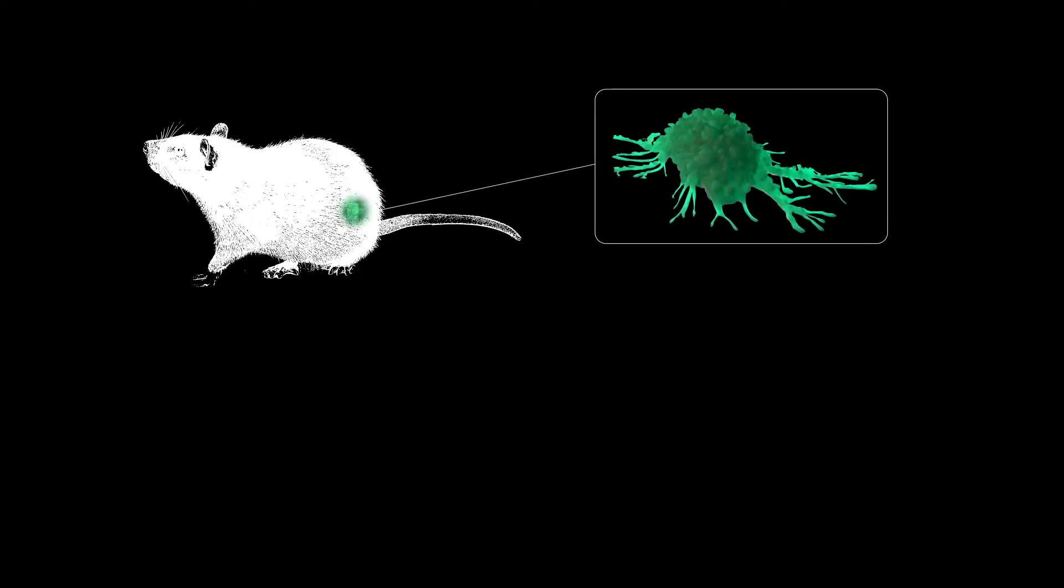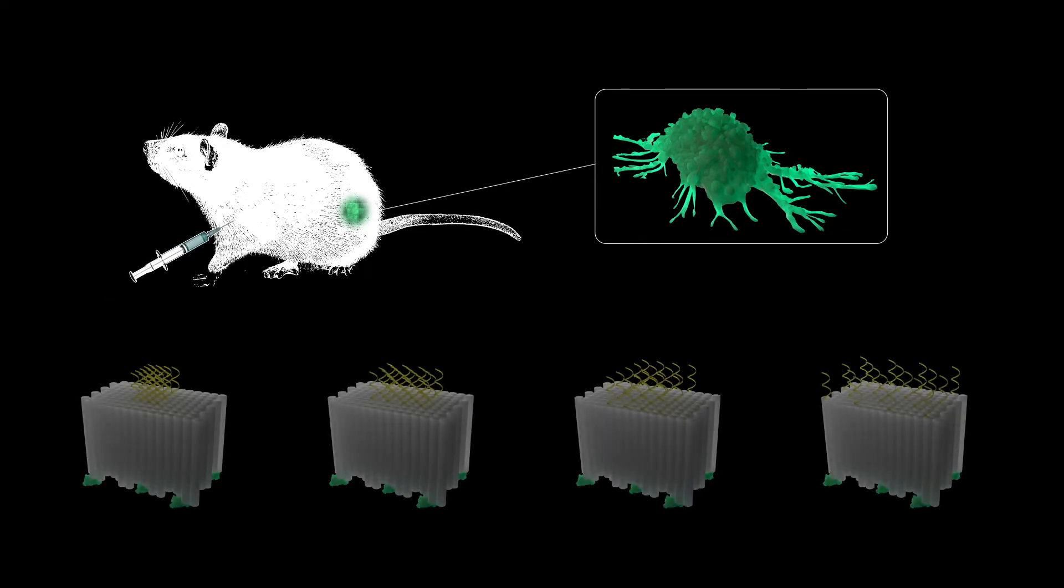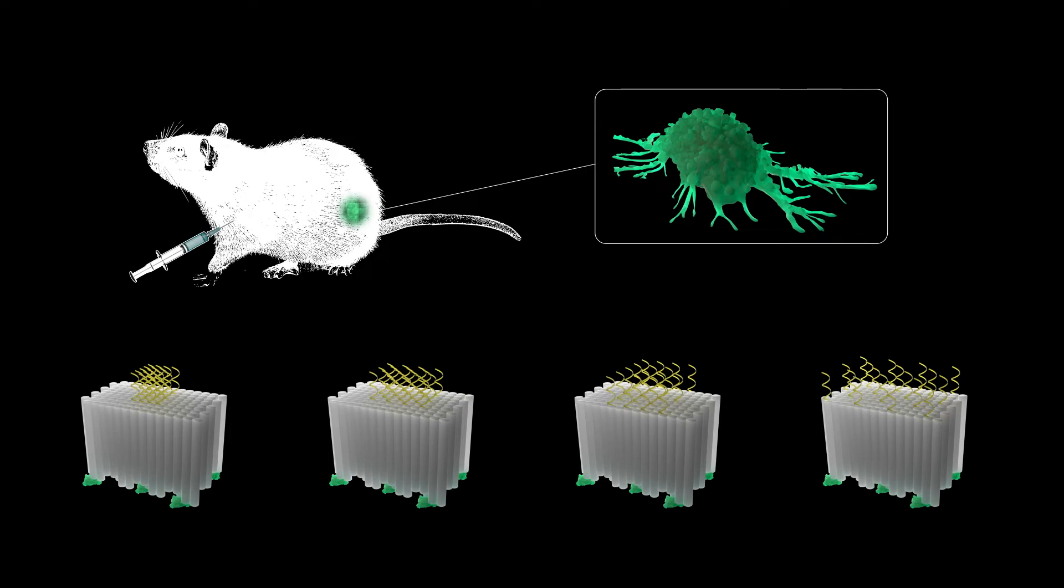The researchers then investigated the DORIVAC vaccines in vivo in mouse melanoma and lymphoma models. After the animals received tumor-seeding cancer cells, the vaccines were injected and tested as a cancer immunotherapy treatment.